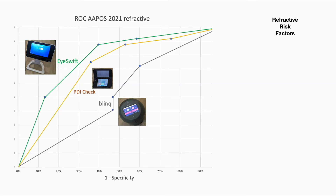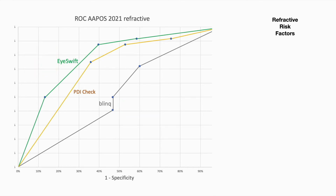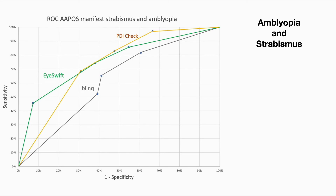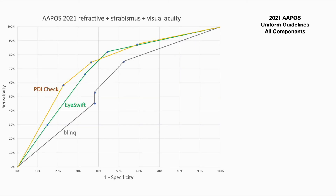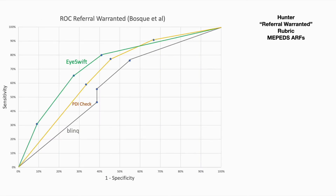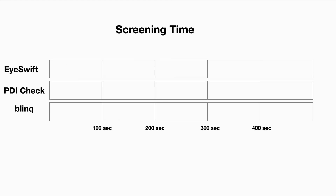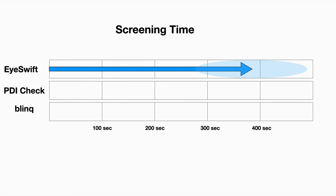Checking iSwift, PDI Check, and Blink compared to refractive APOS risk factors yields this ROC curve. For amblyopia and strabismus, this curve. And for all components — refractive, strabismic, and visual acuity — this curve. This compares to Hunter's new rubric for referral warranted conditions. Looking at screening time, iSwift and PDI Check were compared, and Blink was by far the fastest.